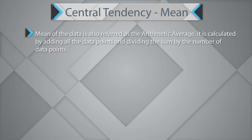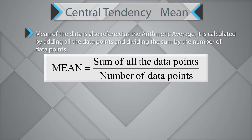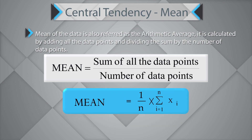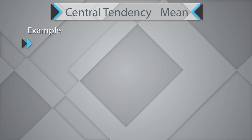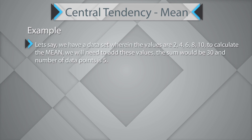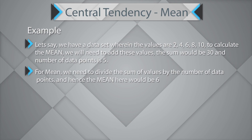Mean of the data is also referred to as the arithmetic average and is calculated by adding all the data points and dividing the sum by the number of data points available. Mean equals the sum of all data points divided by the number of data points, also written as mean equals 1 by n into summation of all data elements. For example, with data set 2, 4, 6, 8, and 10, the sum is 30 and there are 5 data points, so the mean is 30 divided by 5, which is 6.